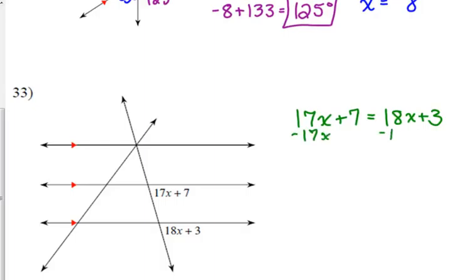And solve for X. So I'm going to subtract the 17X from both sides. So that says 7 is equal to X plus 3. So subtract 3. X is equal to 4. So that means that 18X plus 3 is 75, which means 17X plus 7 is also 75.